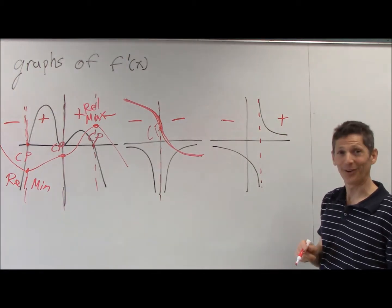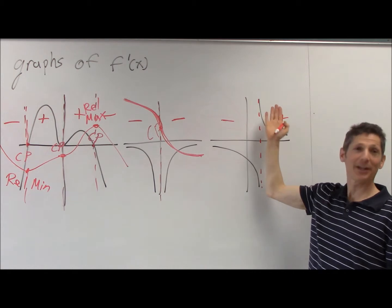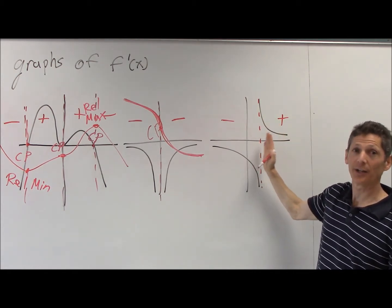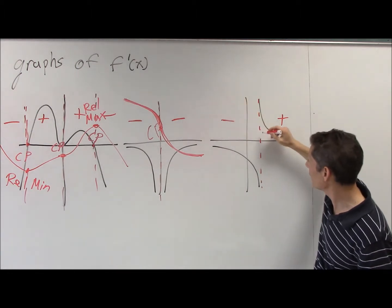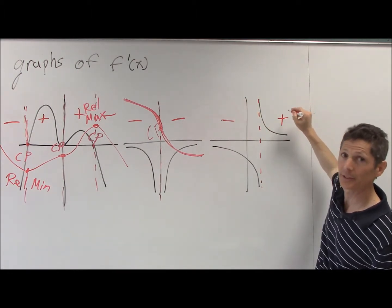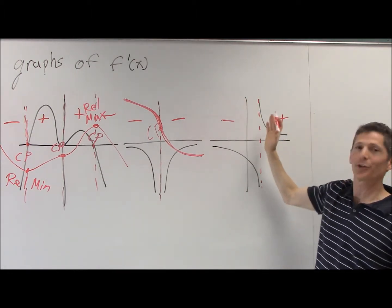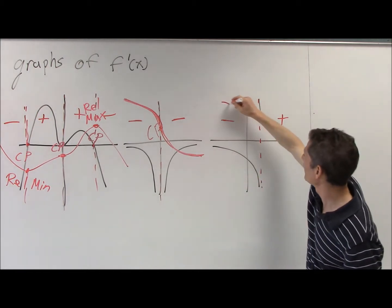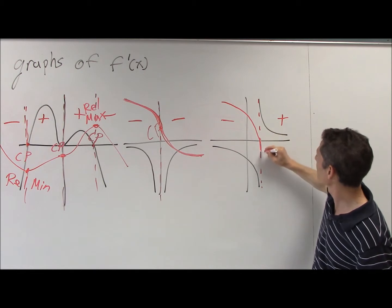Sadly, no. The slope is not zero here, of course. It's undefined. So I can't just go downhill, flat, and uphill. What's the other way that a slope can... It could be a sharp corner! That's right. Downhill, sharp corner, uphill.